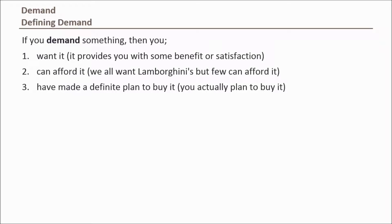Our wants are unlimited, so we cannot use wants alone to define demand. We need to include our budgets to illustrate what we can actually afford, while our actions indicate our plan to go out and buy something. So all three criteria — we want, we can, and we will — determine our demand.